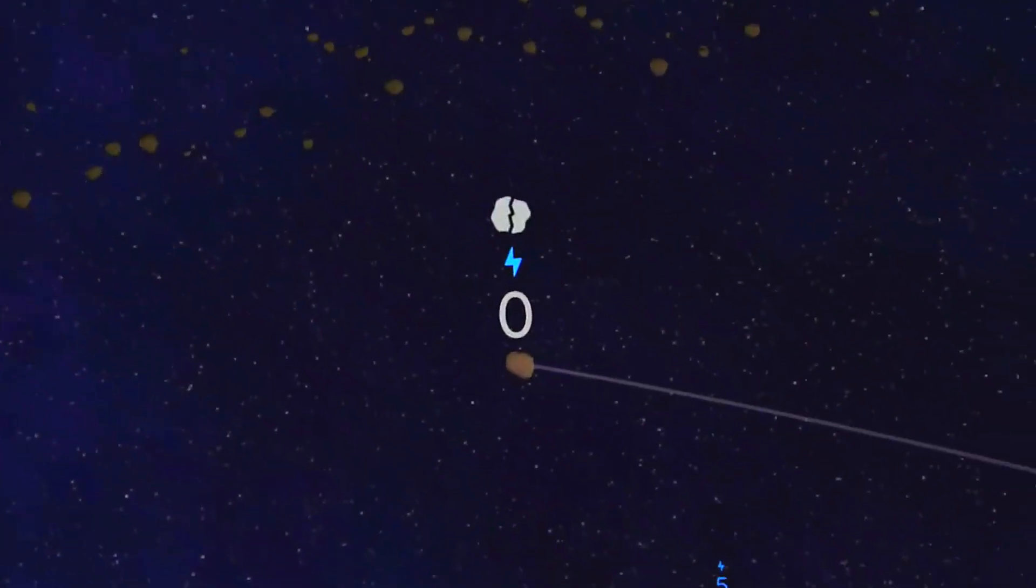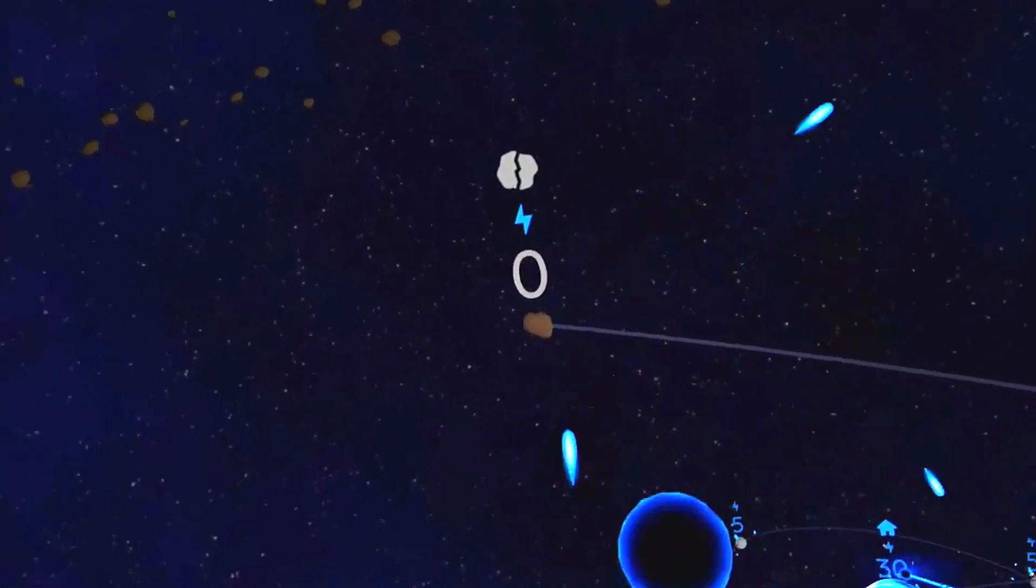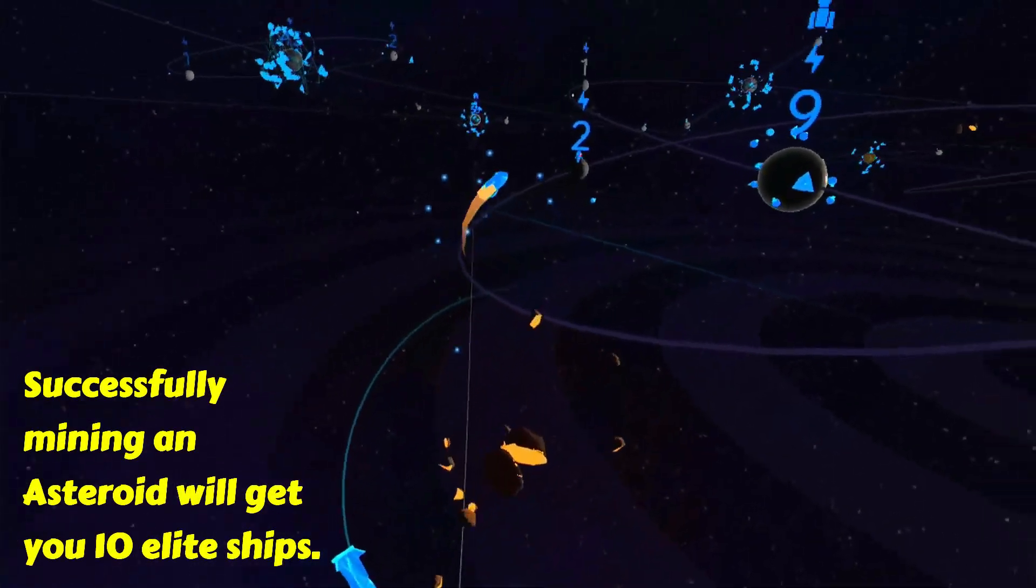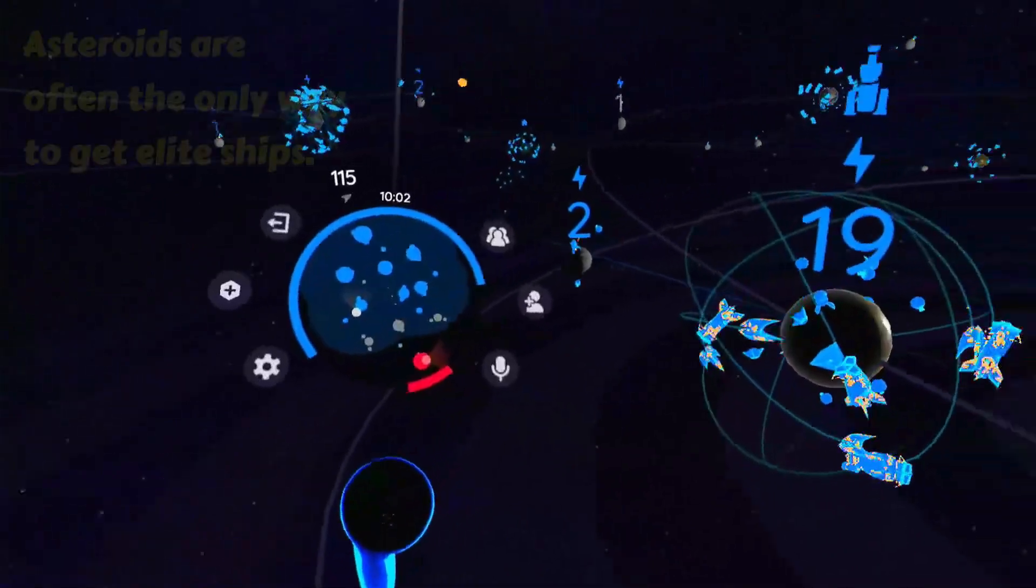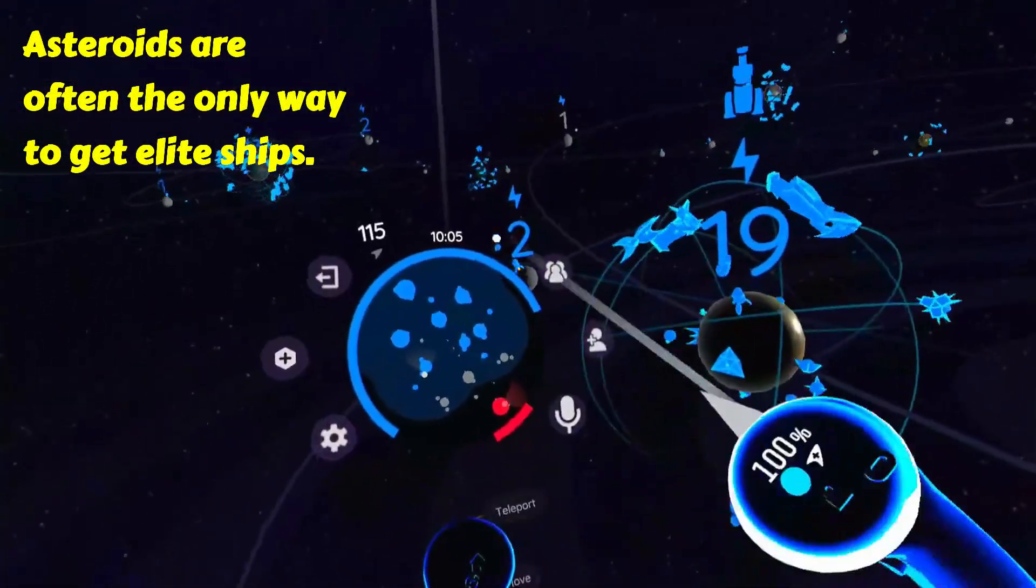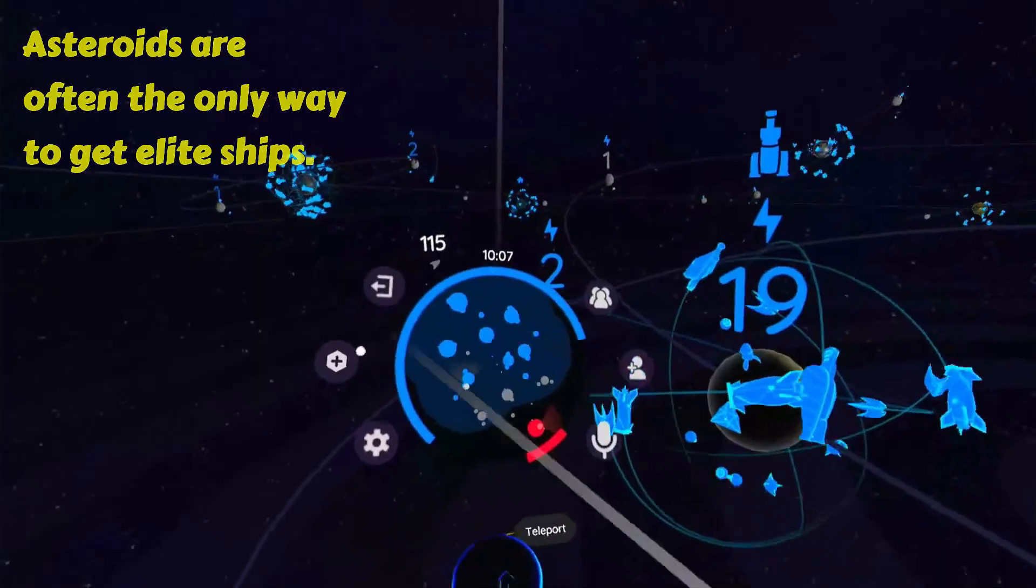Asteroids can be found on any map with an asteroid belt. Asteroids are important because they can give you 10 elite ships when mined. On many maps, you won't have access to these elite ships at all unless you go after those asteroids.